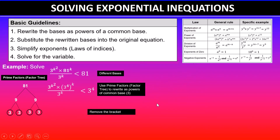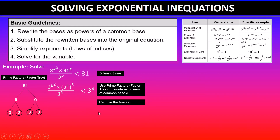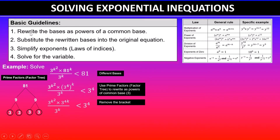Now I will remove the bracket. This is powers of powers, so using the exponent rule: a to the power of m raised to the power of n equals a to the power of m times n. In this case 4 times k gives 4k as the power. So we have 3 to the power of k squared, times 3 to the power of 4k, divided by 3 to the power of k, is less than 3 to the power of 4.